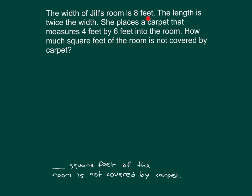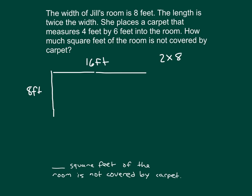Let's start with the width of Jill's room at eight feet, and the length is twice the width. So the length is two times eight, which is 16 feet. Since the room is rectangular, the opposite side is also eight feet, and the other length side is 16 feet.